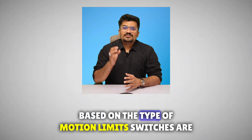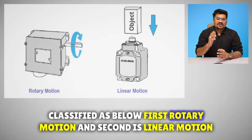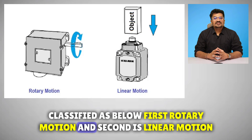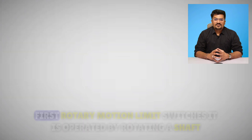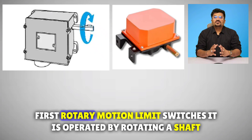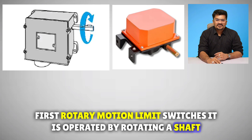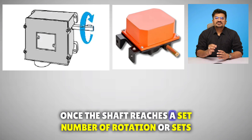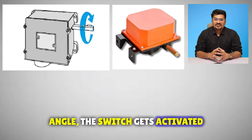Based on the type of motion, limit switches are classified as below: first, rotary motion, and second, linear motion. The rotary motion limit switch is operated by rotating a shaft. Once the shaft reaches a set number of rotations or set angle, the switch gets activated.